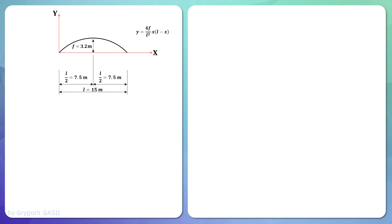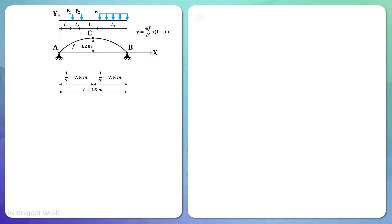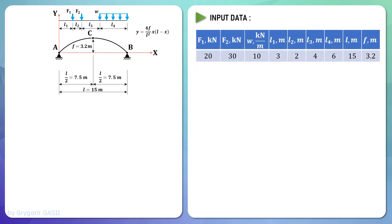The arch has two pinned supports and one hinge. Let's designate the left pinned support as capital A, the right support as capital B, and the hinge as capital C. The origin of the coordinate system and the left support A coincide. The arch is subjected to point and uniformly distributed loads. The point loads are equal to 20 and 30 kilonewtons, and the uniformly distributed load has a magnitude of 10 kilonewtons per meter.